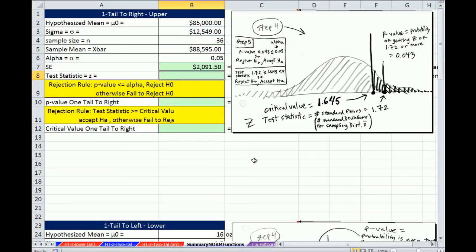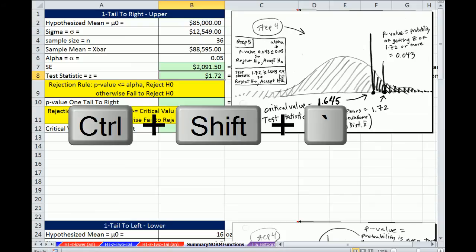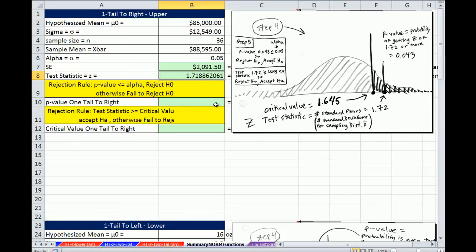Now we can calculate our test statistic. We want to do in the numerator the sampling error. There's our x bar minus our hypothesis mean, and we're going to divide it by the standard deviation for sampling distribution of x bar, which is standard error. I'm going to Control Shift Tilde. That is z. That's our test statistic.